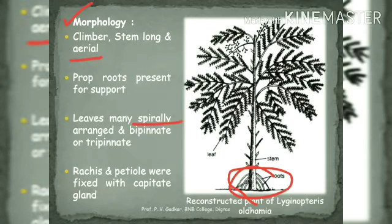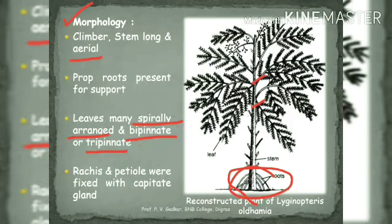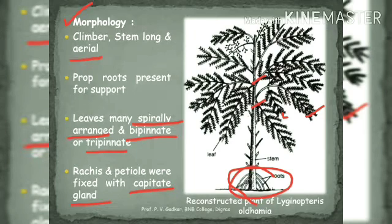The leaves may be spirally arranged, bipinnate or tripinnate. The rachis and petioles are fixed with capitate glands — the main characteristic feature of this plant family — also present on the rachis and petioles.